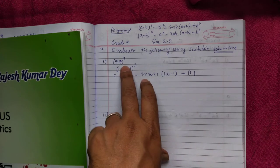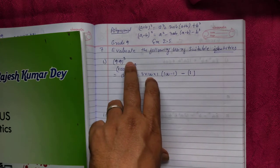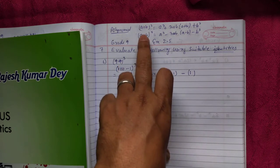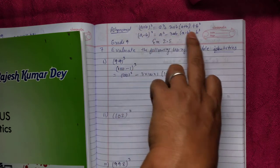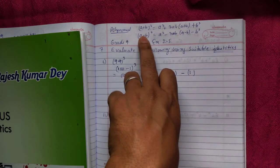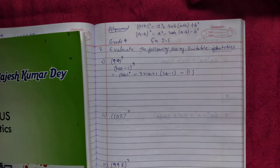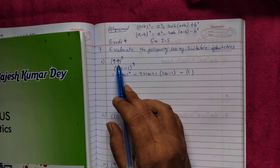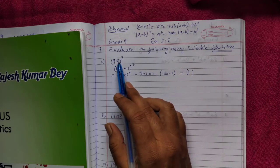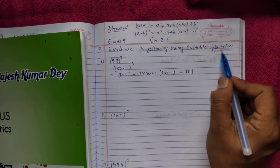We are going to evaluate this 99 cube using the identities. The identity for cube is A plus B whole cube, and A minus B whole cube - these are the formulas. If you multiply directly you will not get a mark, so you have to use identities.